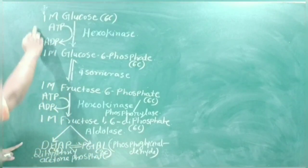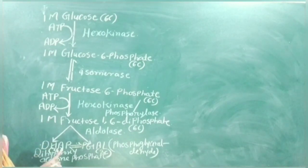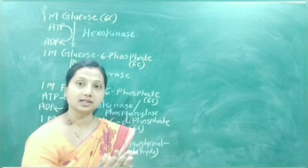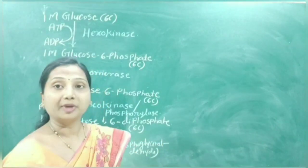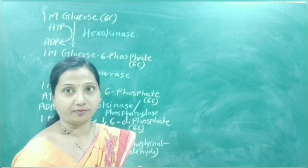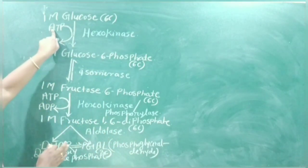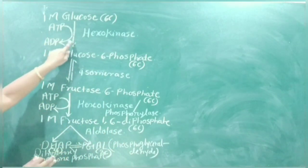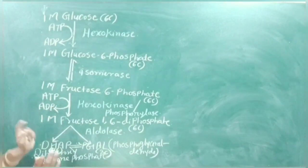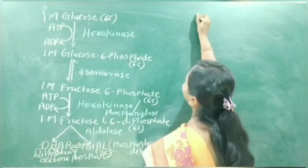From the first step up to this point, these reactions are known as the preparatory phase. In the preparatory phase, two ATP molecules are used — one in each phosphorylation step. We will now continue with the PGAL molecule.